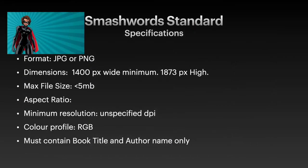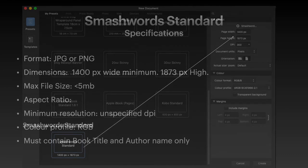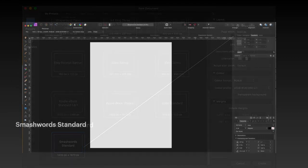Smashwords — you've all heard of Smashwords, which will distribute your book to just about everywhere. Make sure your cover image dimensions are big enough: 1400 by 1873, with a maximum file size less than 5 megabytes. Now in some places I've uploaded 5 megabytes and it's been rejected, but 4.99 goes through. So when they say less than 5 megabytes, be careful — they may mean strictly less than 5. Aspect ratio and minimum resolution are unspecified, but given that it's RGB, you can go for as large a resolution as you like, so long as it fits within less than 5 megabytes.